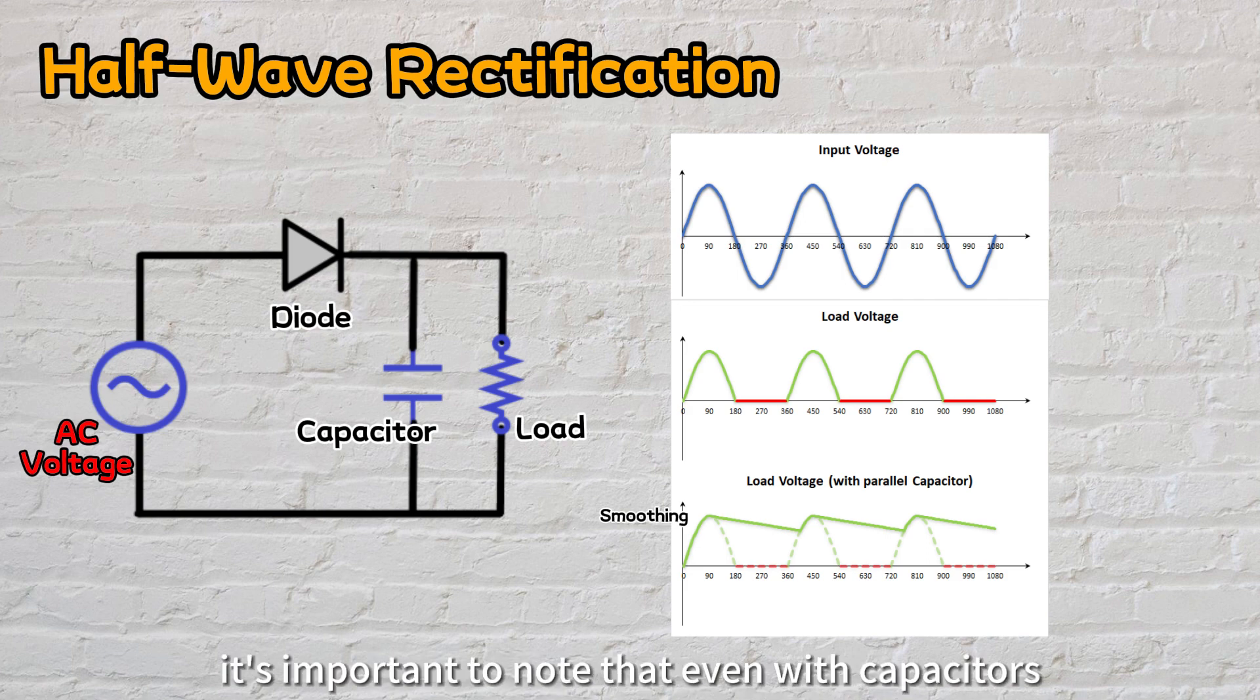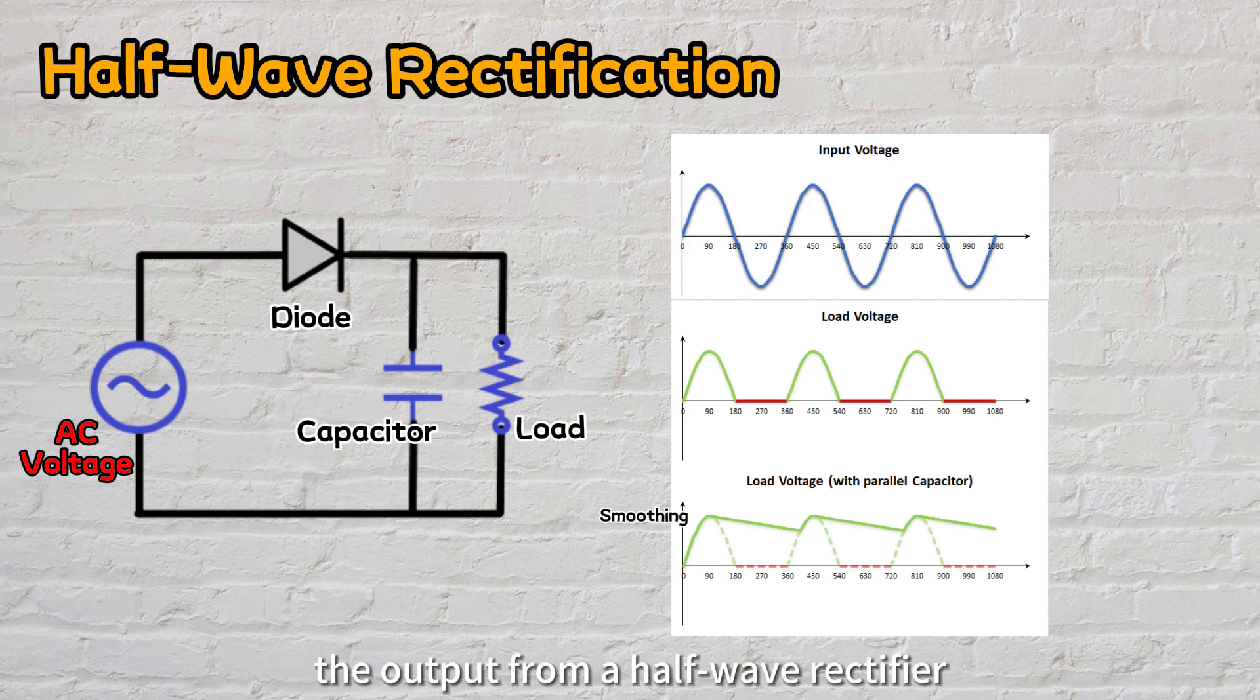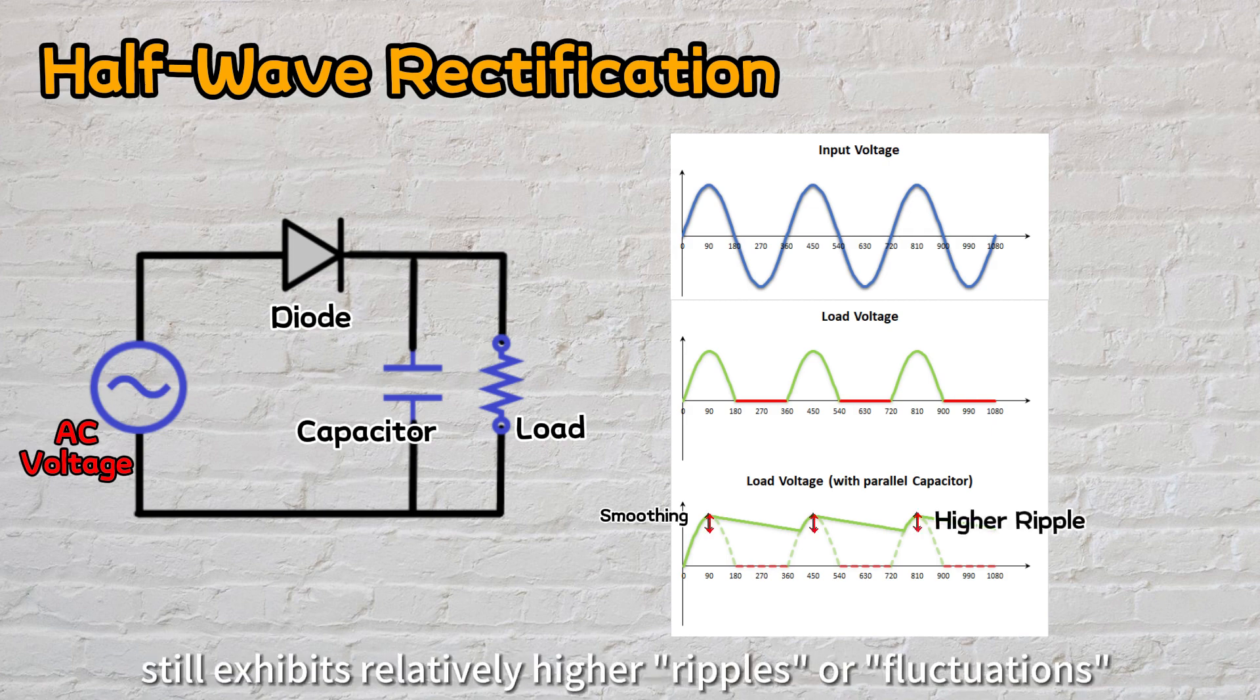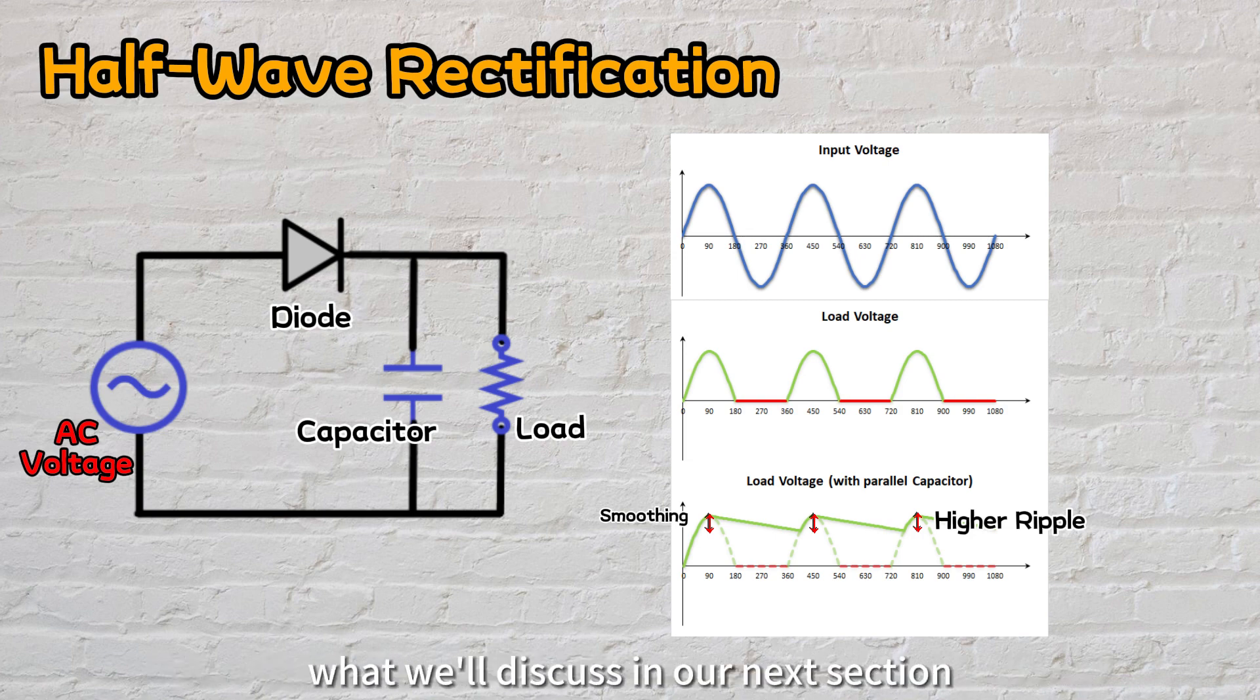However, it's important to note that even with capacitors, the output from a half-wave rectifier still exhibits relatively higher ripples or fluctuations, and may not be as smooth as what we'll discuss in our next section, the full-wave rectifier.